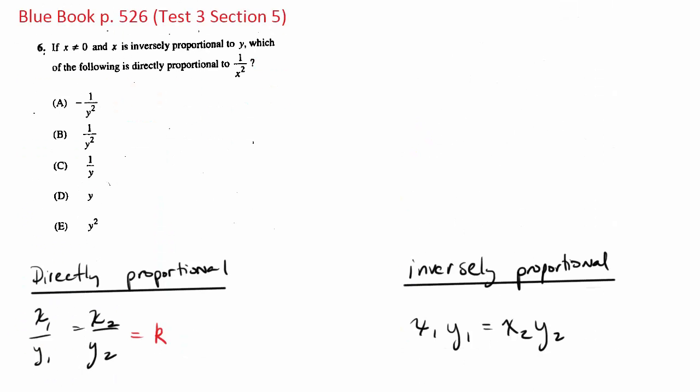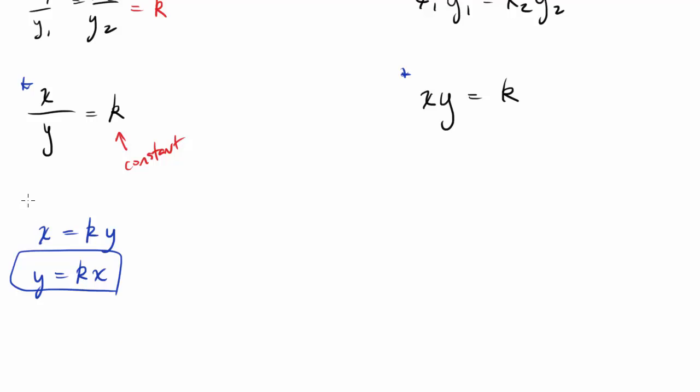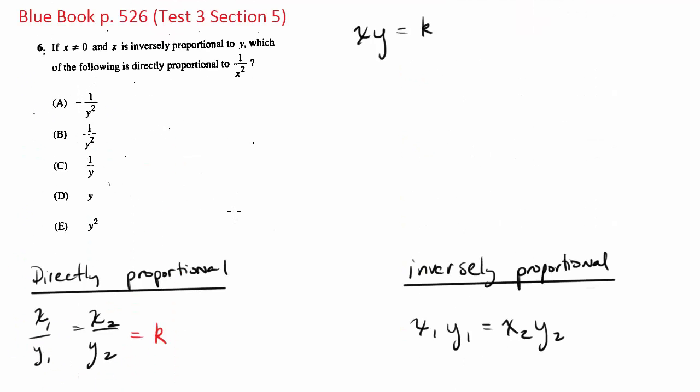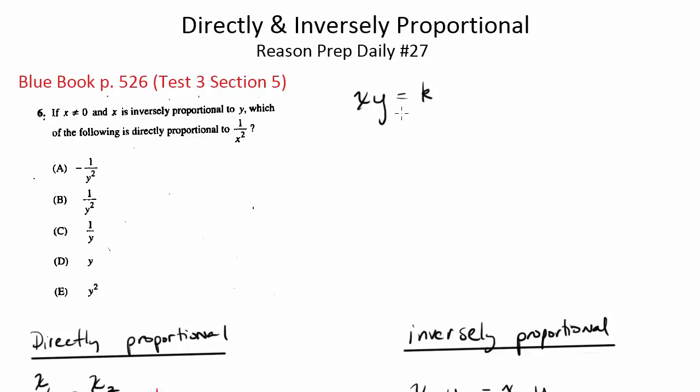We're told x is inversely proportional to y. So we know therefore that xy is going to equal some constant k. Which of the following is directly proportional to 1 over x squared? So what I want to get is I need to get my equation in this form, either two quantities dividing into one another, or where I have one variable equal to a constant times the other variable. In this case, I want to know what's directly proportional to 1 over x squared. So I need to get an x squared in here, first step.